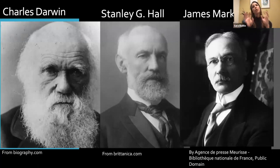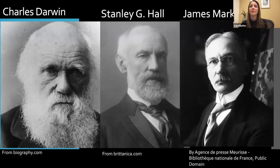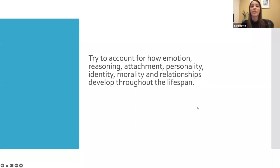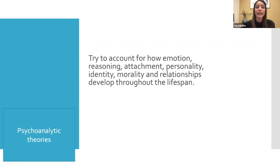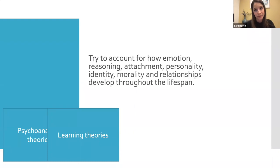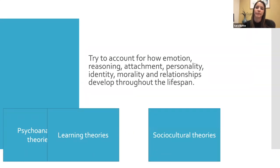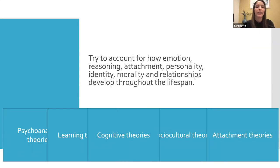Now we know the important figures that laid the groundwork for the field of child development. From then on, researchers started to be really intrigued about how and why development happens. Many people began coming up with theories of child development, trying to account for how emotion, reasoning, attachment, personality, identity, morality, and relationships develop throughout the lifespan. These theories broadly fall into a few categories: psychoanalytic theories, learning theories, social-cultural theories, attachment theories, and cognitive theories.